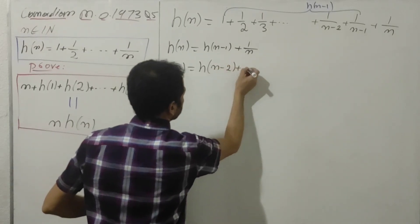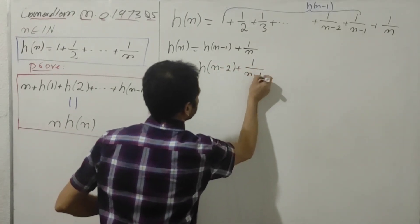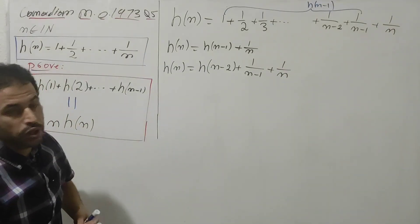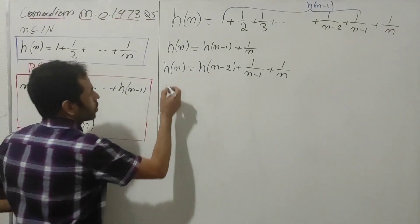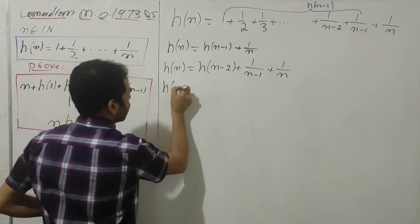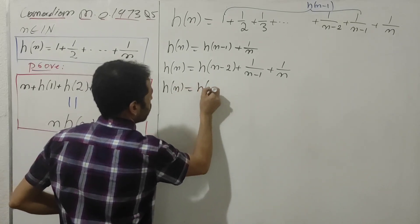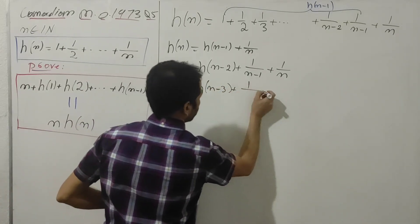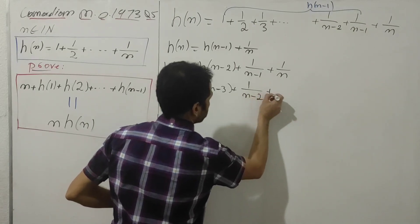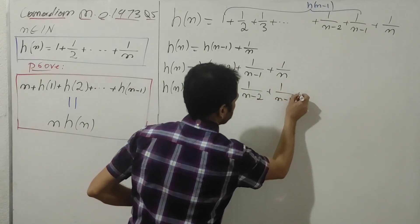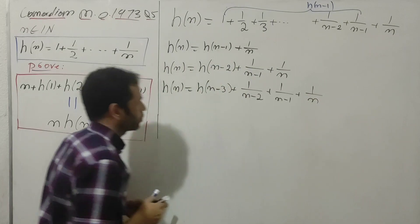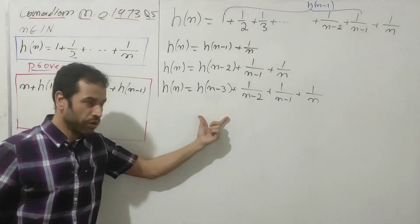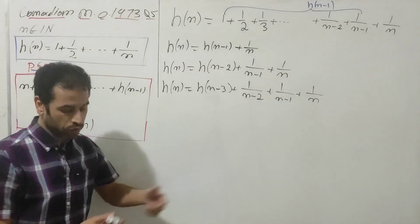The same sequence can be written as H(n) equals H(n-2) plus 1/(n-1) plus 1/n. For the third step, H(n) equals H(n-3) plus 1/(n-2) plus 1/(n-1) plus 1/n.